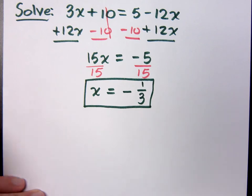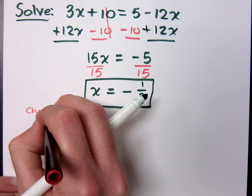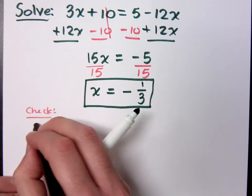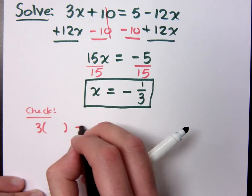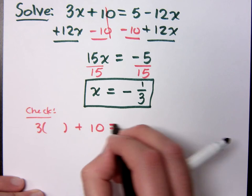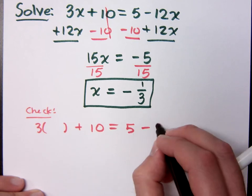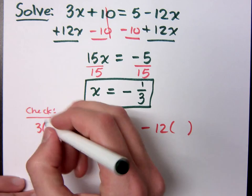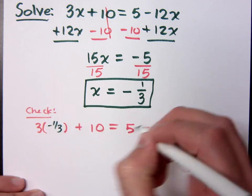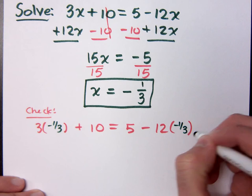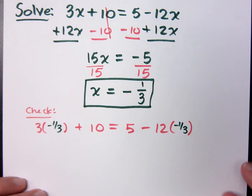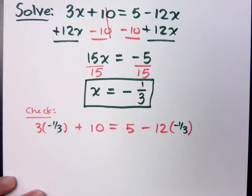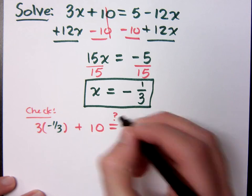Now, in terms of checking this. Checking means I'm going to replace my x with my proposed solution of negative one third. So, instead of writing x's, I'm doing parentheses, and I'm going to plug in negative one third. Are you with me on that? So, I need to see, are these two sides of the equation equal?